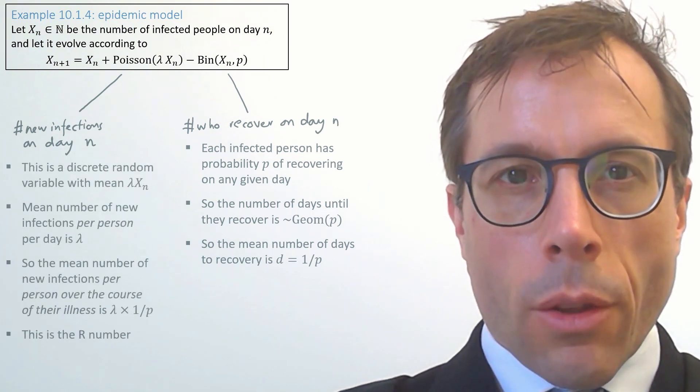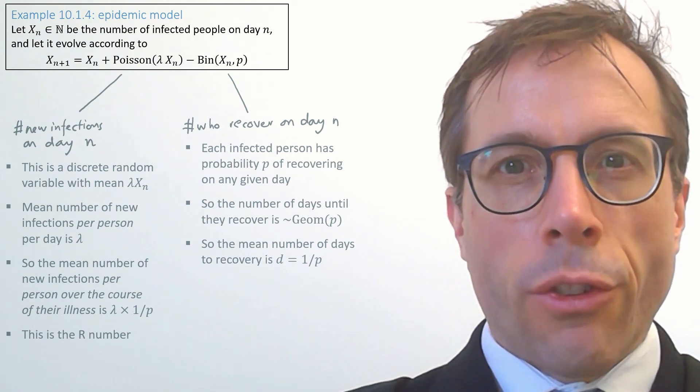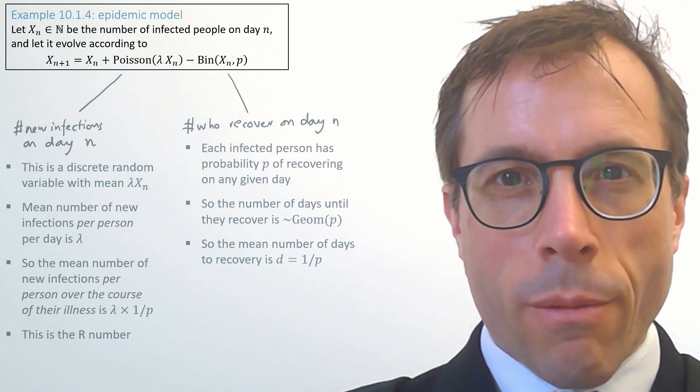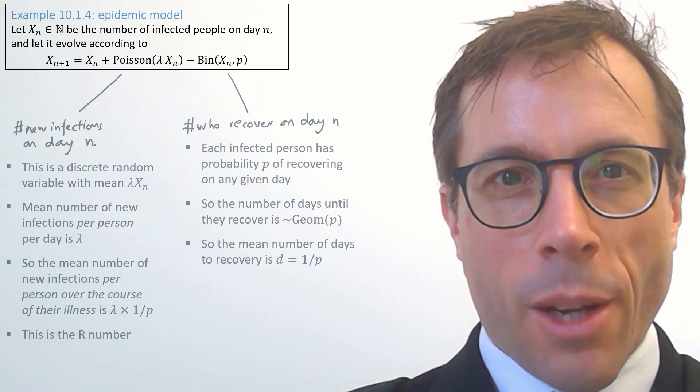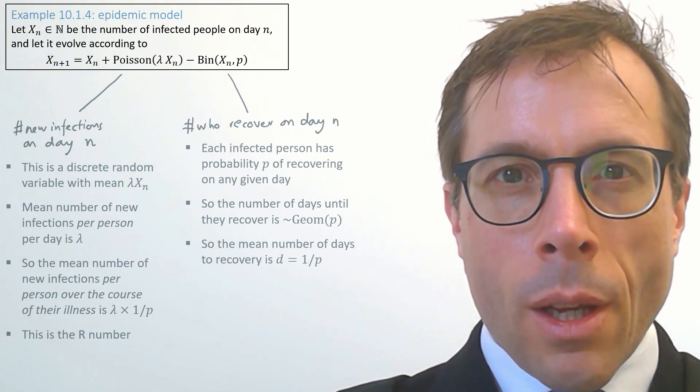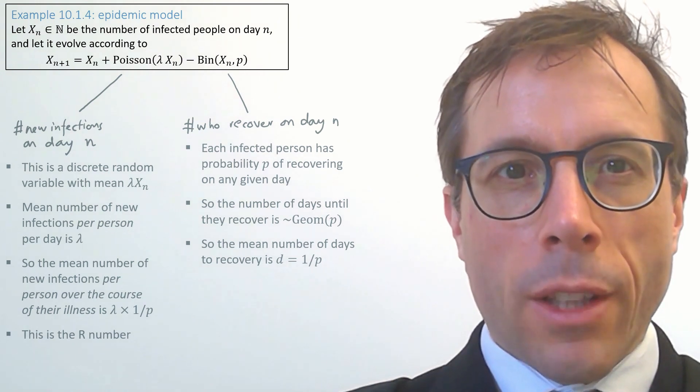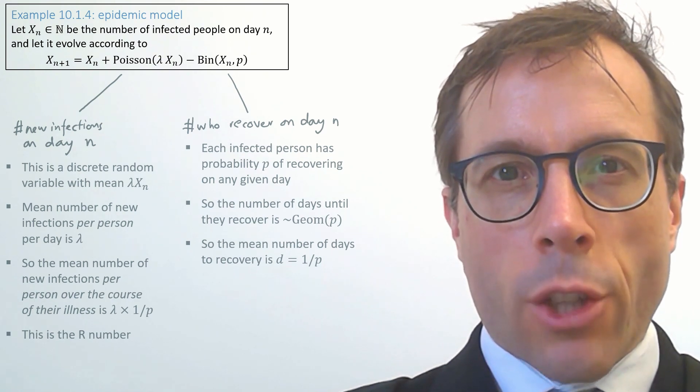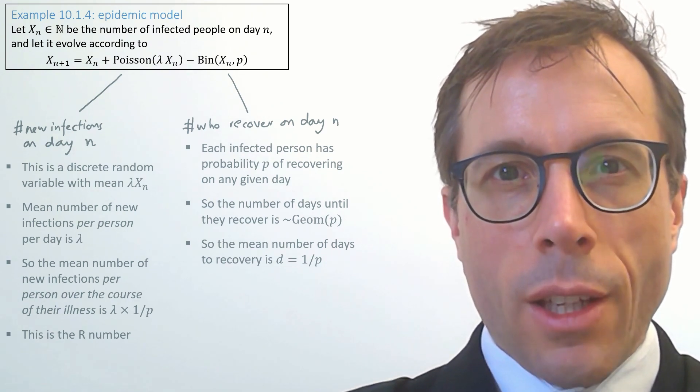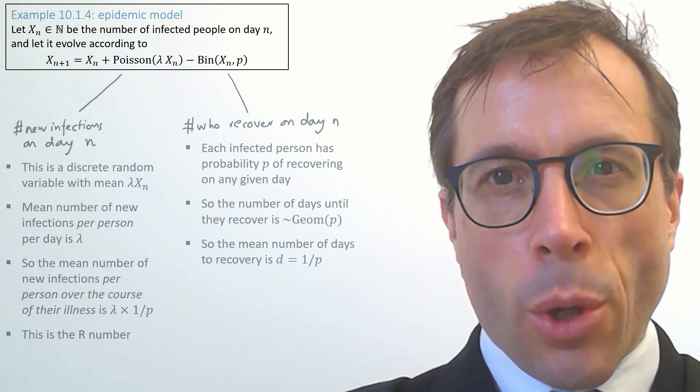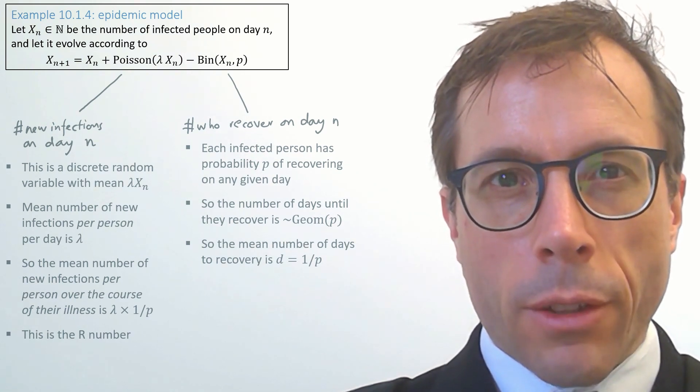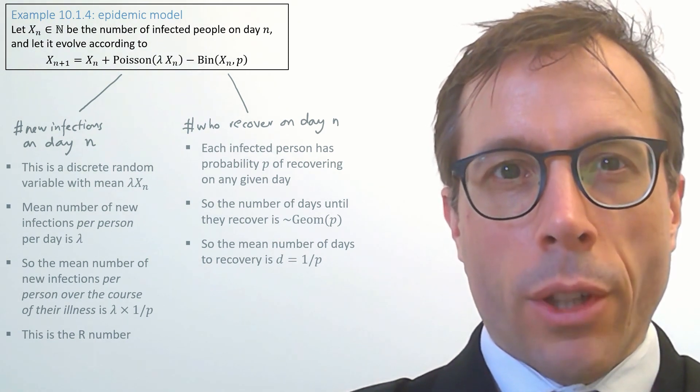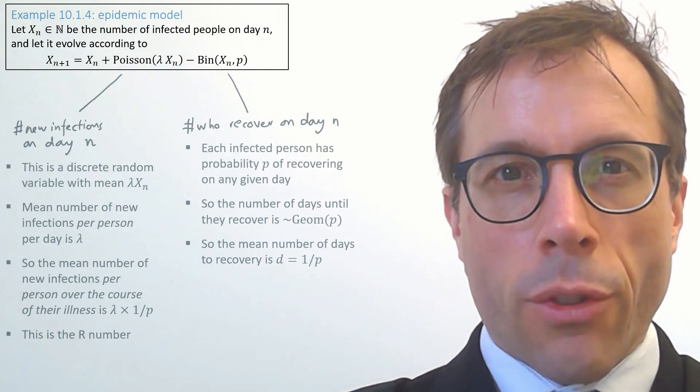The other term, the term for new infections, says that the number of new infections is Poisson with parameter lambda times xn. First thing to say, this is a discrete random variable, which is good because it's meant to count people and we don't want fractions of people. If we look it up on Wikipedia, we see it has mean lambda times xn. So dividing by xn, the mean number of new infections per person per day is lambda. That's per day, so if we multiply by the total length of an illness, we get lambda divided by p, the average number of infections per person over the course of their illness. And that number is what's known as the R number.